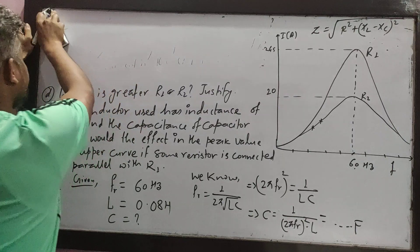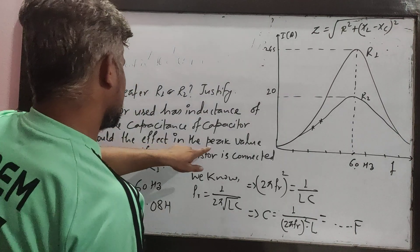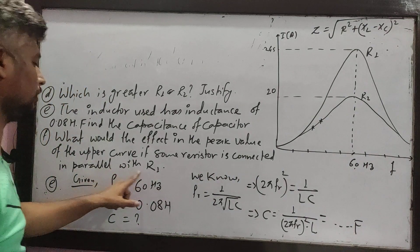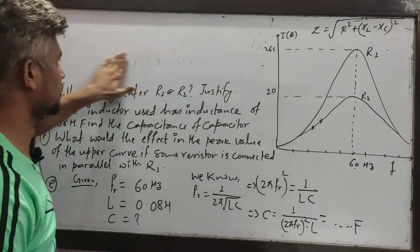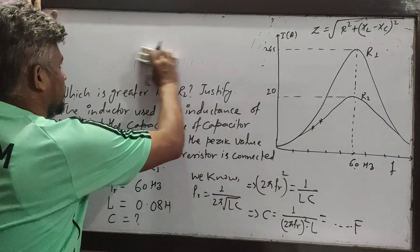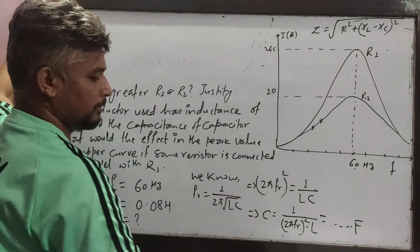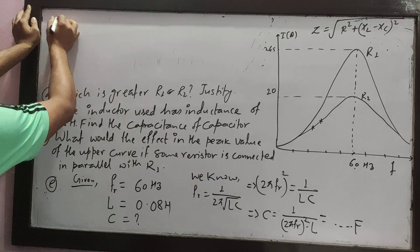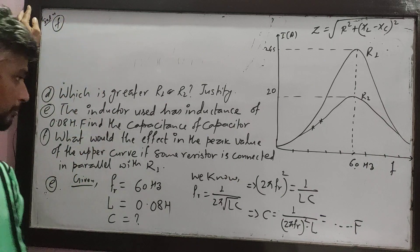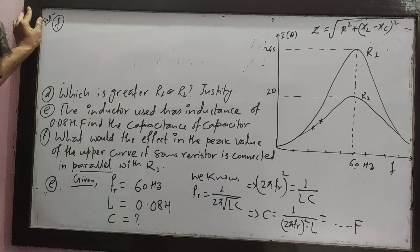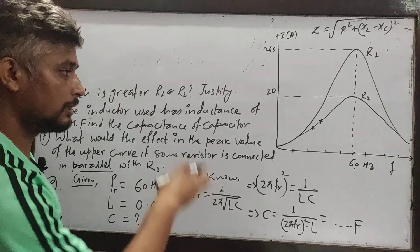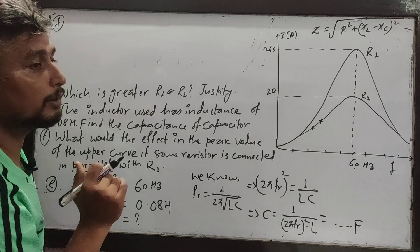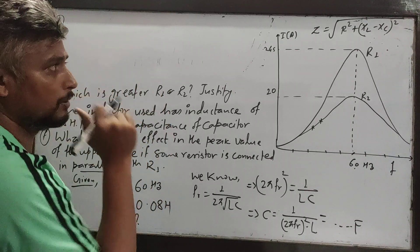What would be the effect on the peak value of the upper curve if some resistor is connected in parallel with R1? When a resistor is connected in parallel with R1, the equivalent resistance decreases because parallel combination decreases equivalent resistance. So the current value increases, meaning the peak is very high.